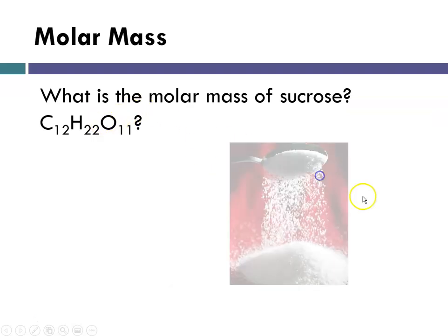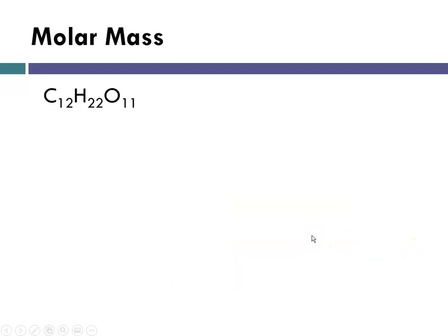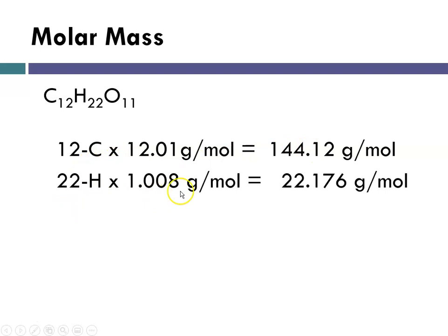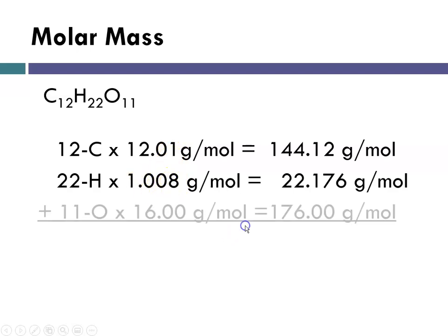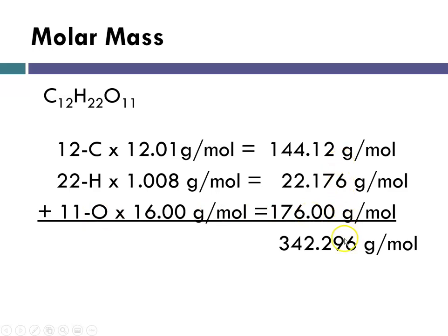What about something like sucrose, which is table sugar? Again, the formula is going to lead us through. So 12 times carbon equals this, 22 times hydrogen. Where am I getting these numbers? I'm reading them off the periodic table, and I'm rounding to the hundredths place, and for hydrogen to the thousandths place. 11 oxygens is going to be this number. Then I add them up, and because I had a hydrogen present, I am not at the hundredths place. So my last step is always to round to the hundredths place. This 6 is going to cause me to have to round this up. So my molar mass in this case is 342.30, again, to the hundredths place.